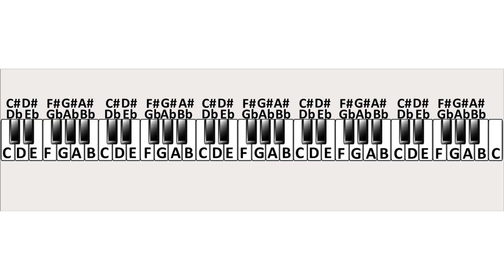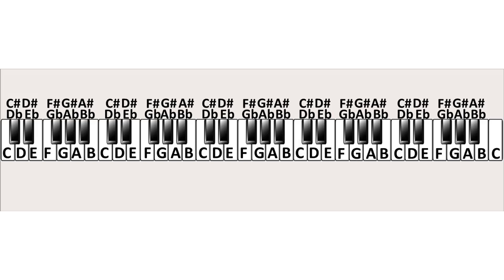A whole tone interval is the same as two halftone intervals added together. So from C to D is a whole tone. From C-sharp or D-flat to D-sharp or E-flat is also a whole tone. But also from E to F-sharp or G-flat, or from A-sharp or B-flat to C. The last interval we will see is an octave — the interval between C and C, or between F and F, or between A-flat and A-flat, etc.